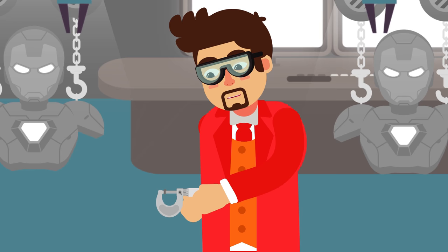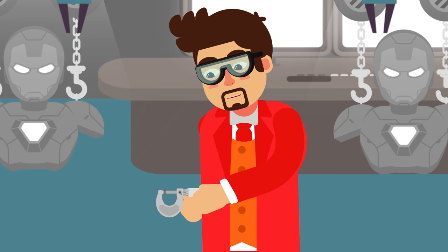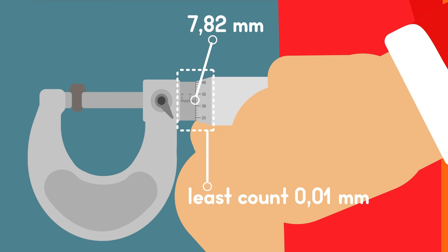Screw gauge or micrometer screw: It is used to measure small lengths with greater accuracy than a vernier caliper. The least count of a screw gauge is 0.01 millimetres. It also requires us to find the zero error of the screw gauge. To accurately measure the length, the zero error value will then be used to correct the obtained readings.